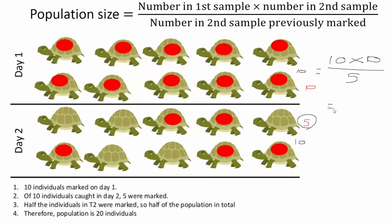Because I'm not going to use a calculator, I'll just do this in my head. 10 times 10 is 100. 100 divided by 5 equals 20. Therefore, I am estimating there are 20 turtles in this environment. The numbers might get strange in exam questions, but ultimately you're just doing the same thing — one sample, then another sample, then compare how many you caught that were marked.